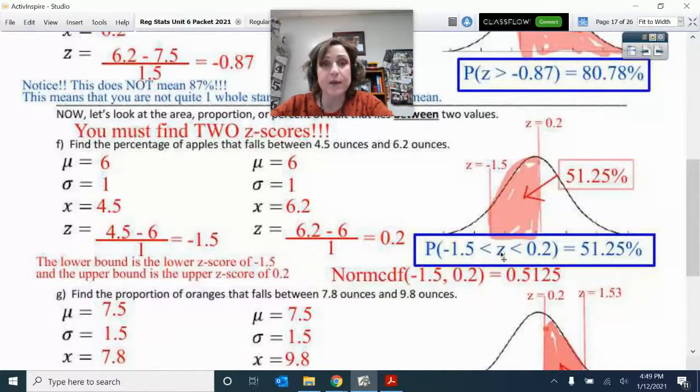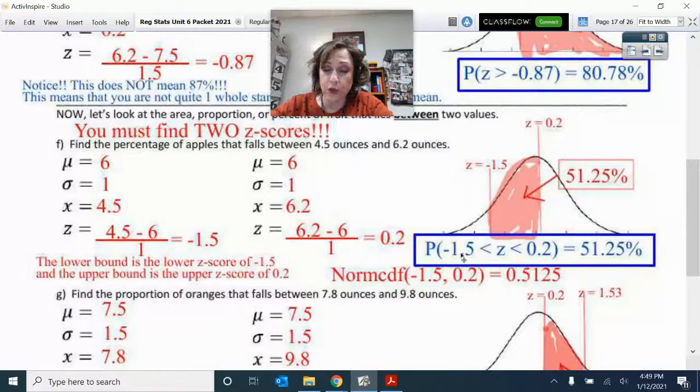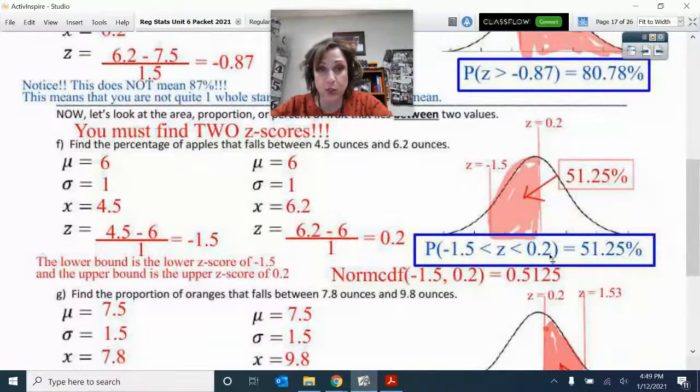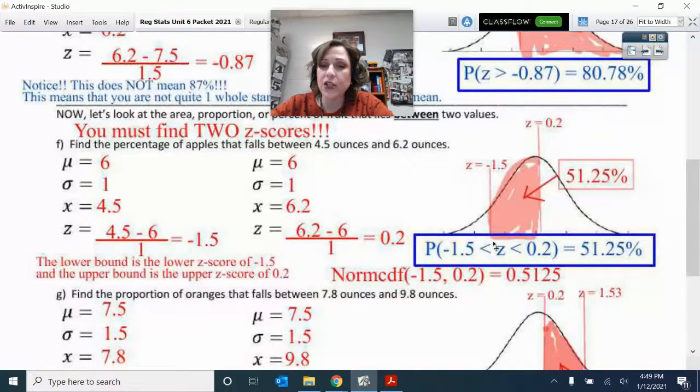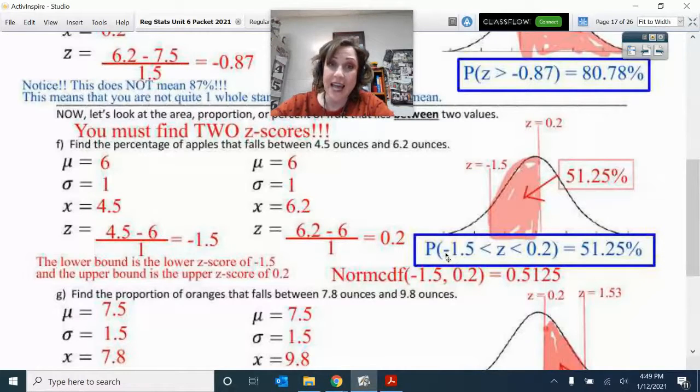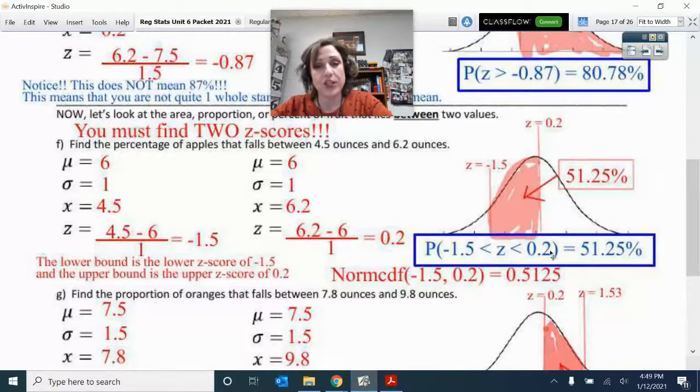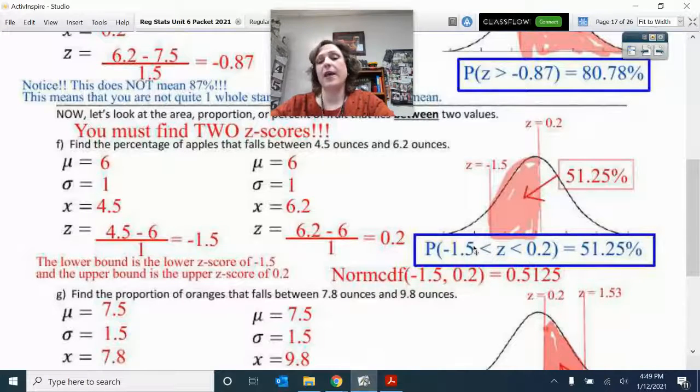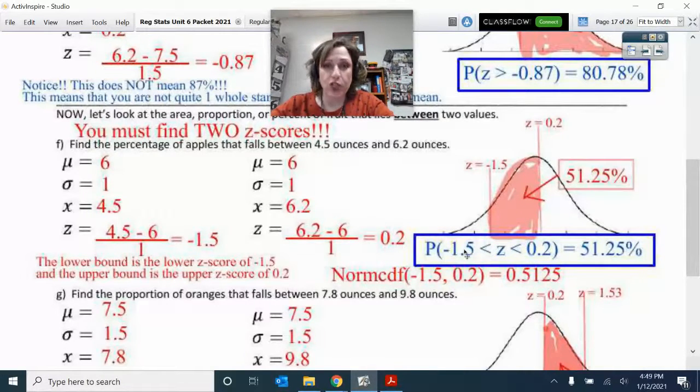put the Z in between the two Z scores, and then look at how my inequalities go. They're pointing to the left because the left is less. So negative 1.5 is less than Z, which is less than 0.2. They will always do that when you want the middle in between.